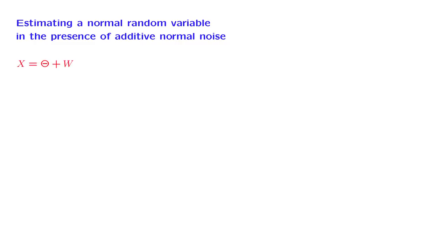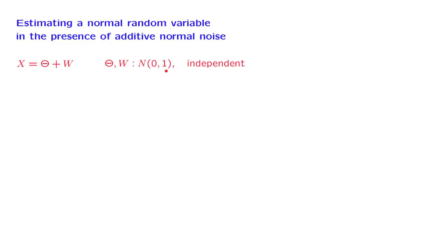The specifics of the model are as follows. There's an unknown parameter modeled as a random variable, theta, that we wish to estimate. What we have in our hands is theta plus some additive noise w, and this sum is our observation x. The assumptions we make are that theta and w are independent standard normal random variables.